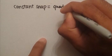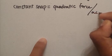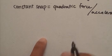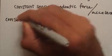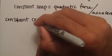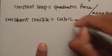A constant snap, let's try that. A constant snap would be a quadratic force applied, or a quadratic acceleration. We could expand this a little bit further. A constant crackle, that would be a cubic force applied.